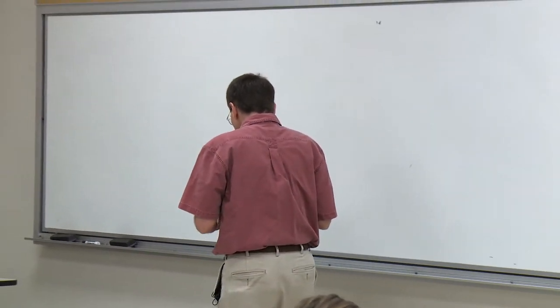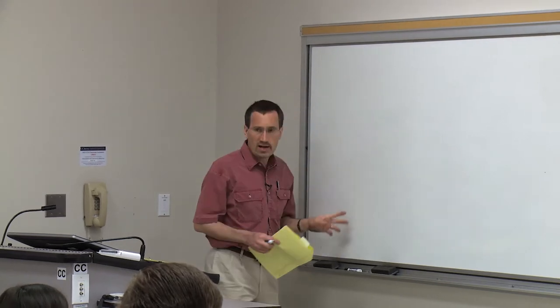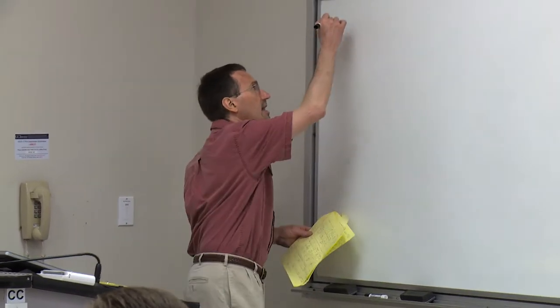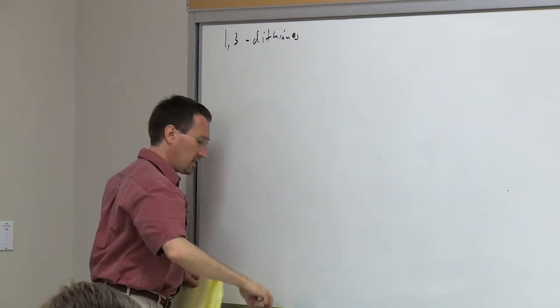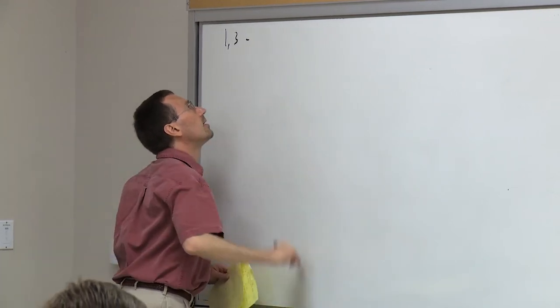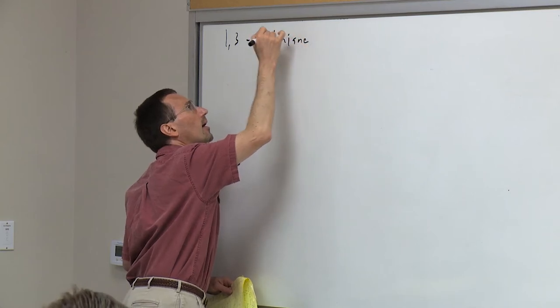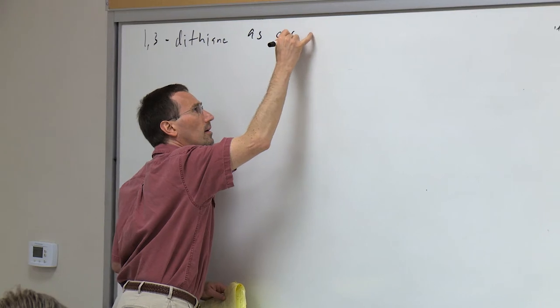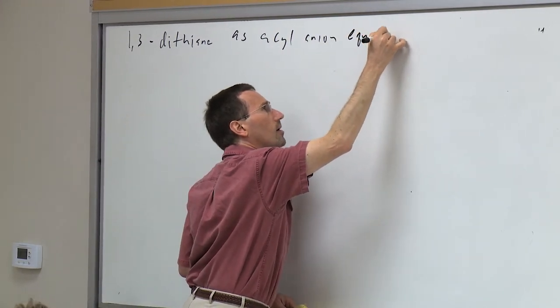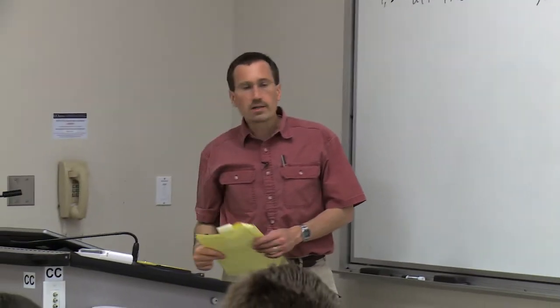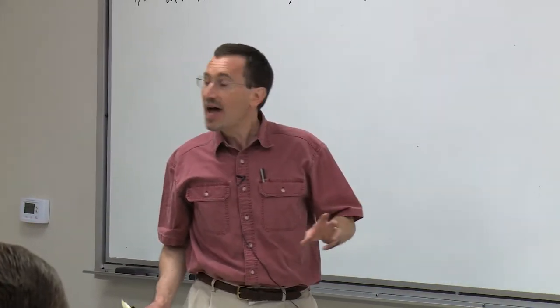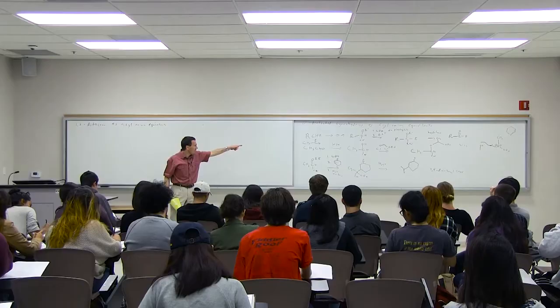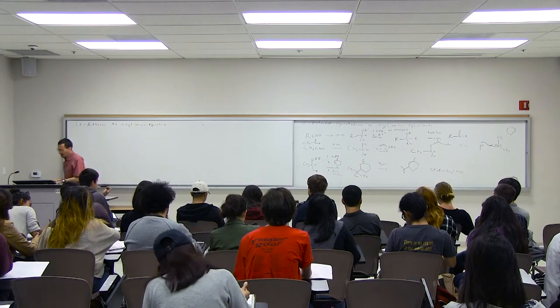I want to show the example that Seebach developed with Corey: 1,3-dithianes as acyl anion equivalents. The same basic idea—we're going to find a way of stabilizing a negative charge at a position that was once a carbonyl and has the potential to become a carbonyl again, just as we did with the aldehyde through the cyanohydrin and then back-hydrolyzing it.